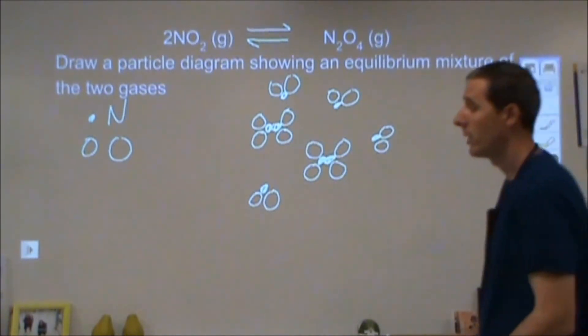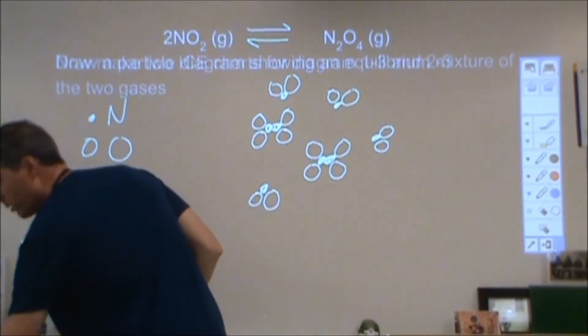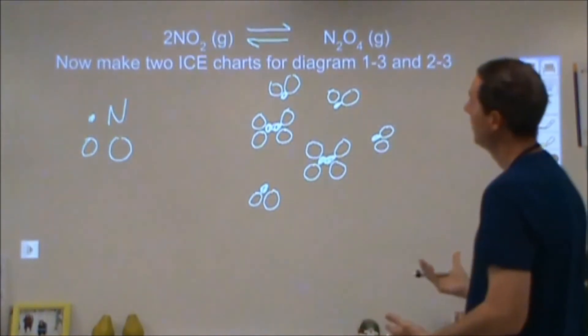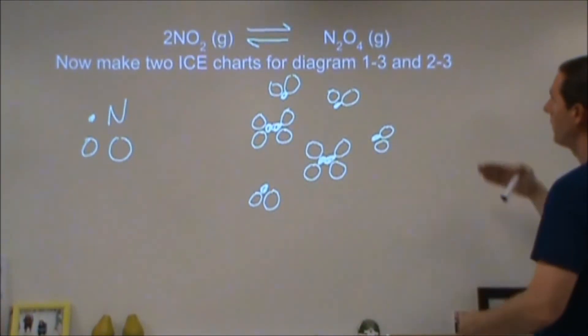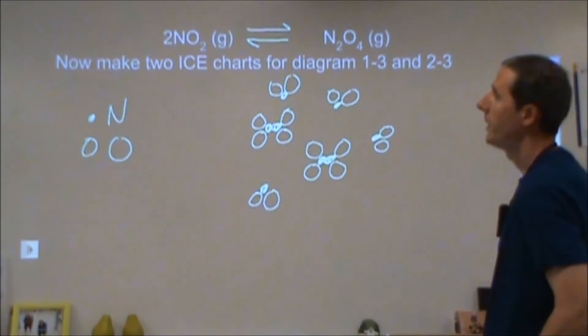The next problem says to figure out an ICE chart for going from diagram one to three and from diagram two to three, and then calculate the equilibrium constant.